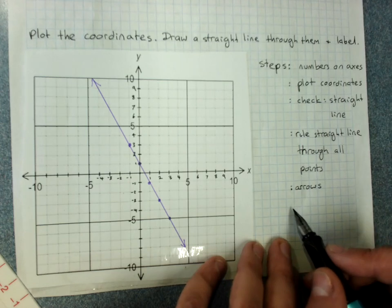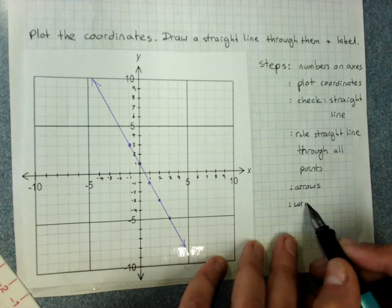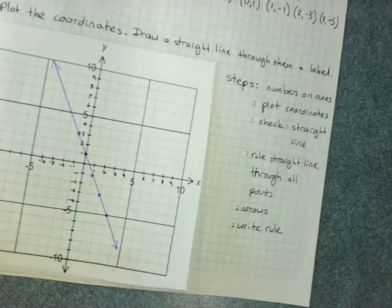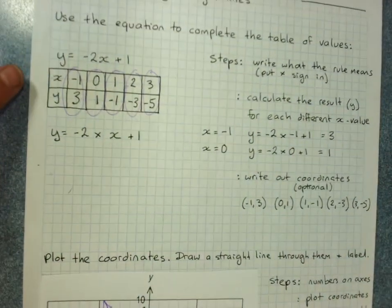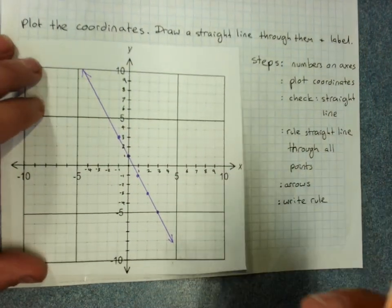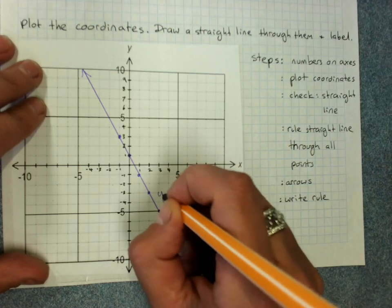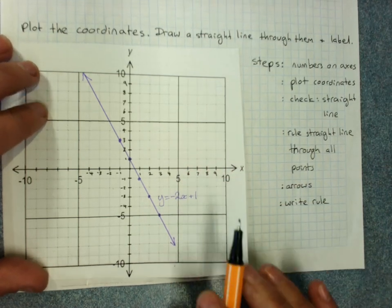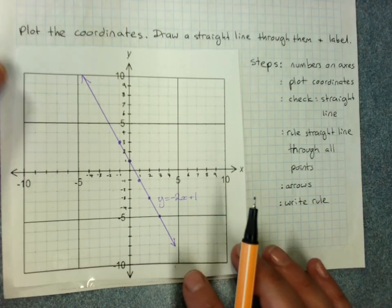And then next to the line, write the rule, the equation. So we go all the way back up to our table of values. Y equals negative 2x plus 1. And somewhere next to it we write y equals negative 2x plus 1. And that's how you graph a line.